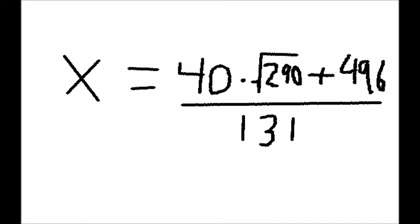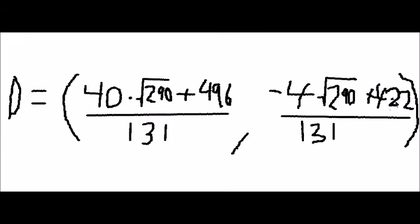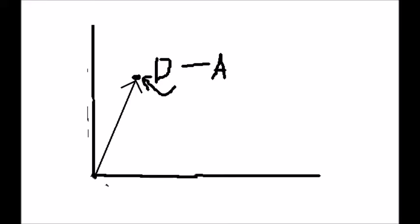We can then plug this back in to find the y coordinate of point D. Point D's coordinates are ((40√290 + 496)/131, (-4√290 + 422)/131).